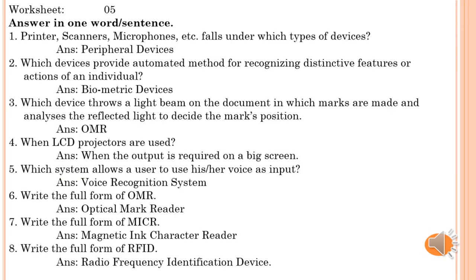Now worksheet five — answer in one word or one sentence. First question: printer, scanner, and microphone fall under which type of device? Answer: peripheral device. Second: which device provides an automated method for recognizing distinctive features of an individual? Answer: biometric device.